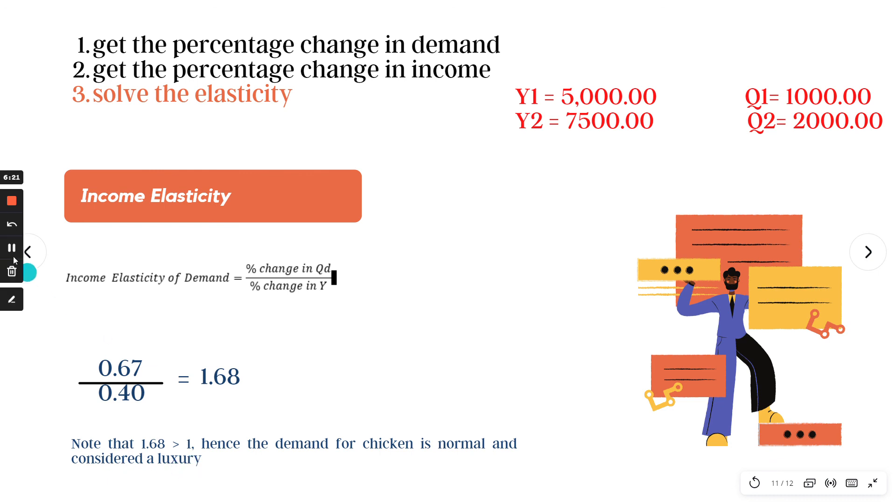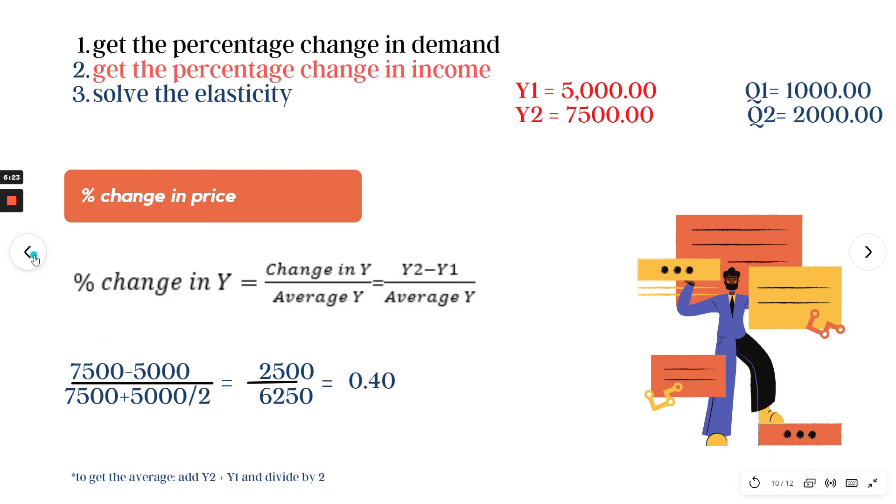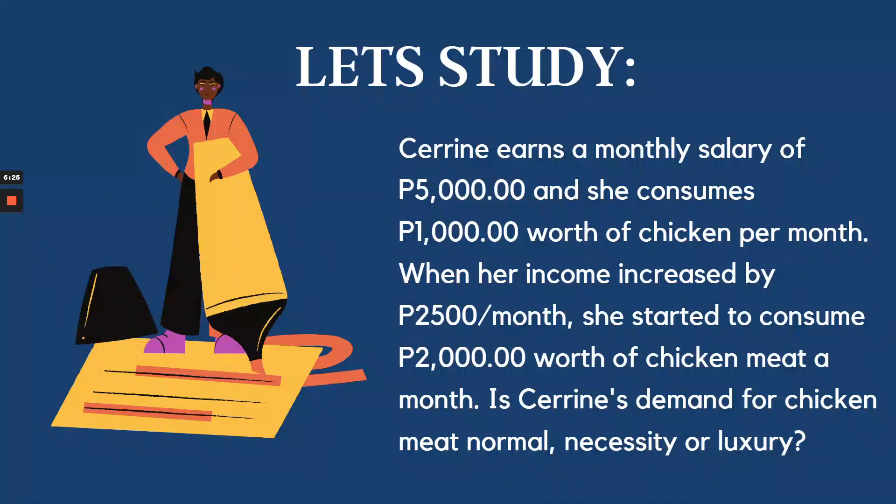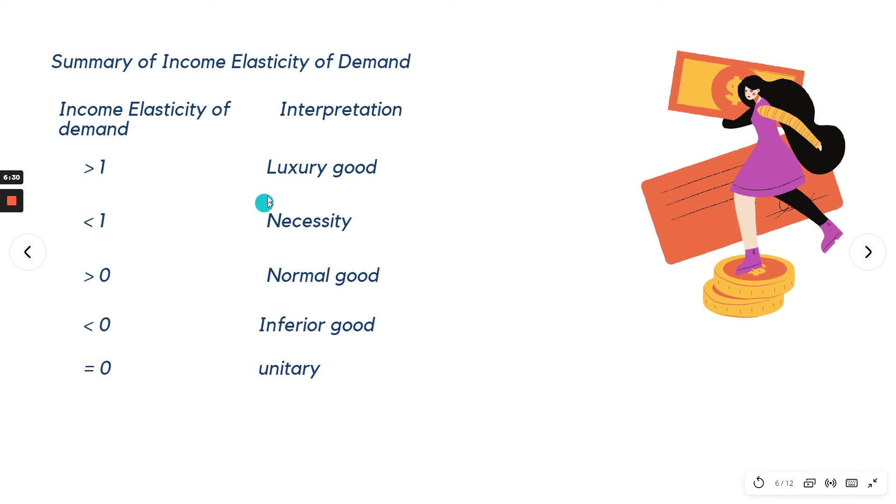If we are going to go back to our table for the summary, we have if it's greater than 1, it's a luxury good, and it is also normal good because it is not negative. So it's luxury and a normal good.